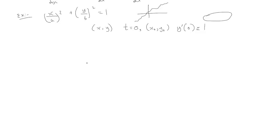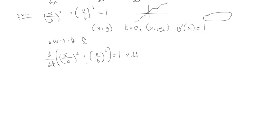Before that, let's implicitly differentiate this and get a better idea of what's going on. We'll differentiate the entire equation with respect to t. We've differentiated with respect to x in the previous video, but this will be slightly different. Let's write out the equation first before moving towards the differentiation.